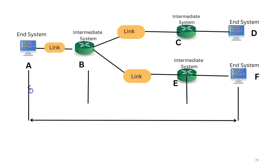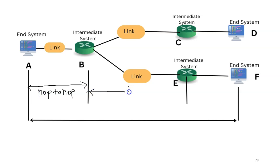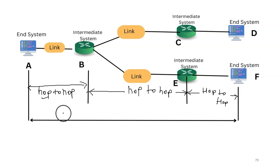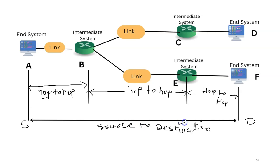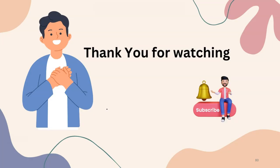The delivery between A and B is known as hop-to-hop delivery; delivery between B and E is also hop-to-hop delivery; and delivery between E and F is also hop-to-hop delivery. Communication between two adjacent systems is known as hop-to-hop delivery, and delivery between the two end systems — from source to destination — is known as end-to-end delivery or source-to-destination delivery. Source-to-destination delivery is performed by the network layer, while hop-to-hop delivery is performed by the data link layer. In the next video lecture, we will see the working of the data link layer with its services. Thank you for watching — for more such videos, stay connected with this channel.